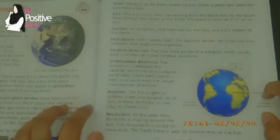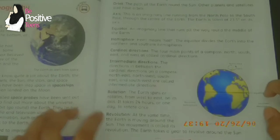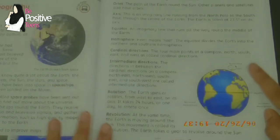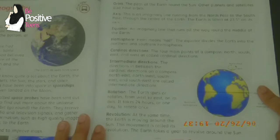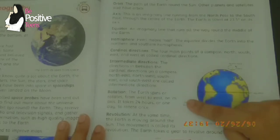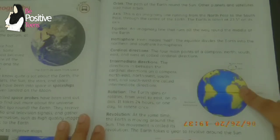Next is rotation. The earth spins or rotates from west to east on its axis. It takes 24 hours, or one day, to rotate once.